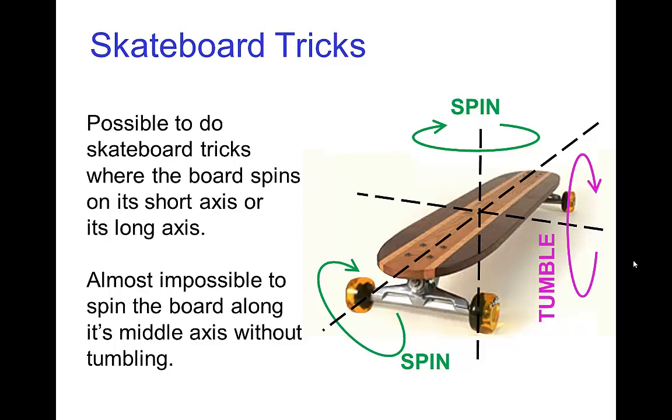Another example you could think of is a skateboard. A skateboard has a long axis down the board, a short axis straight up and down through the center. And if you take a board and try to turn it along those axes, around those axes, you'll probably be able to get a spinning motion.